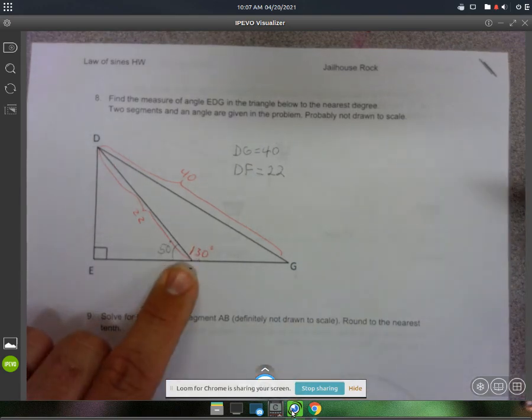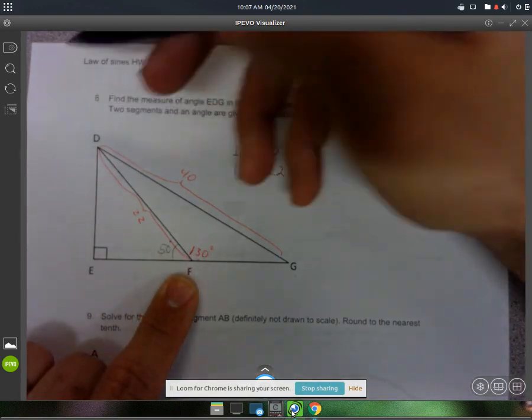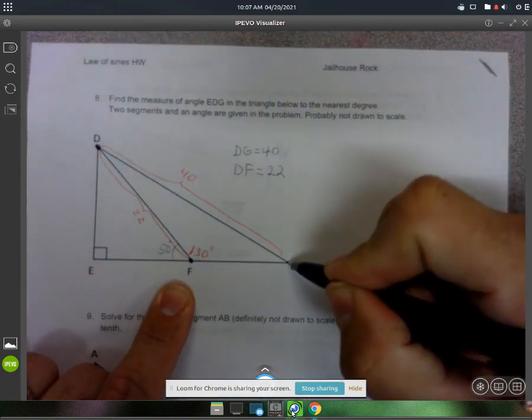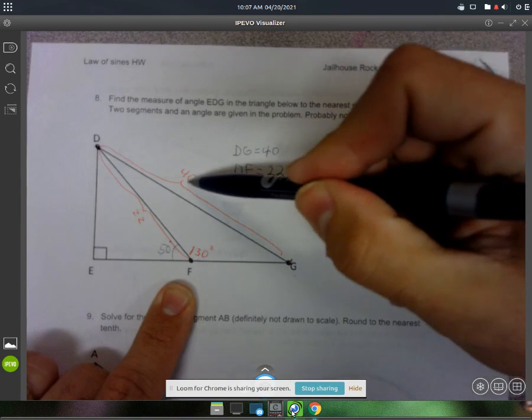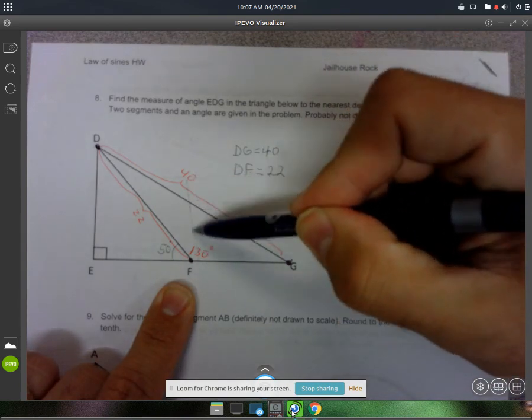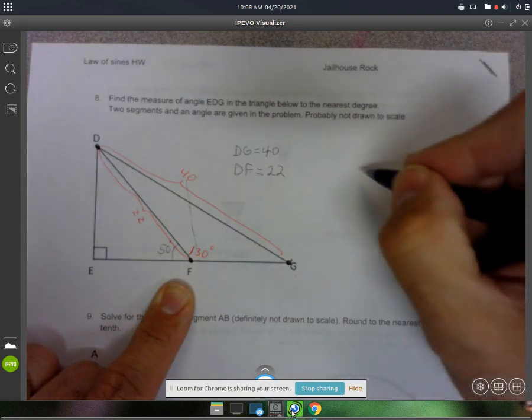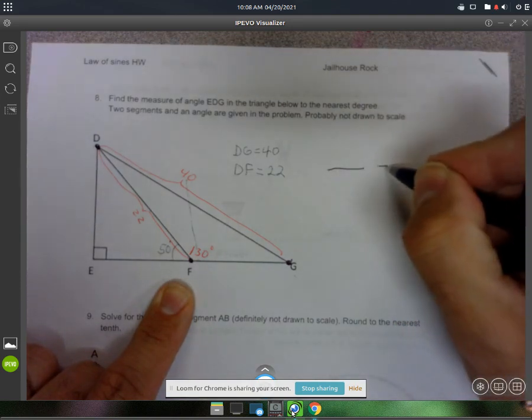So that one's 130. So what I'm looking at is this really big obtuse triangle here. So you see how the 40 and the 130 are across from each other? So I can use that to set up my first fraction for the law of sines.